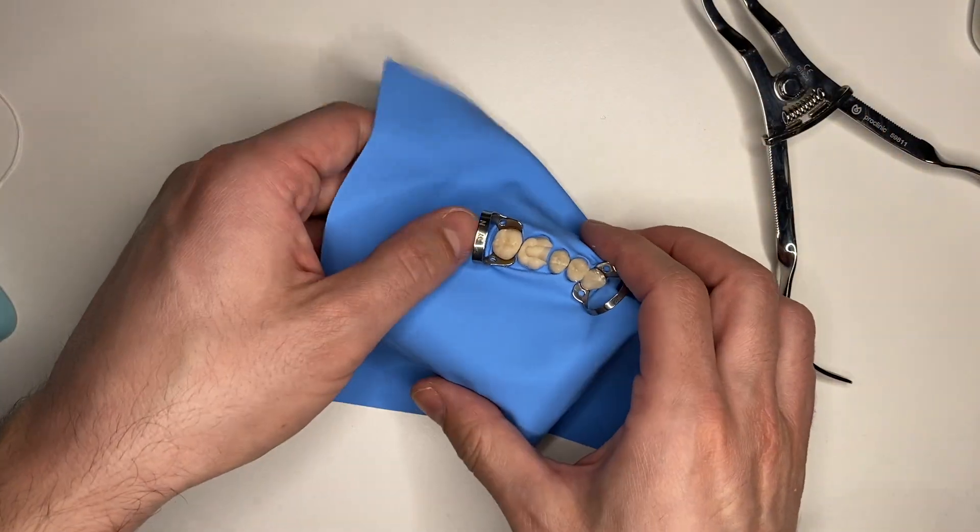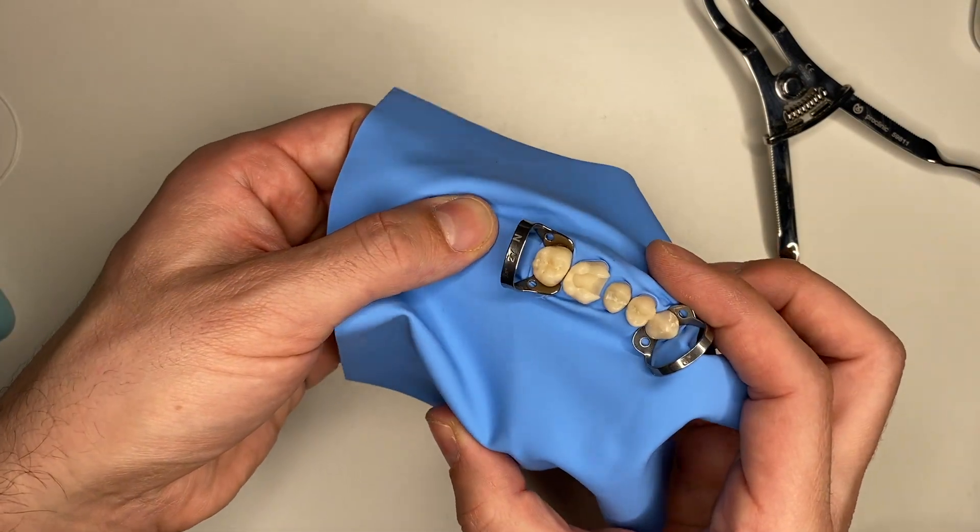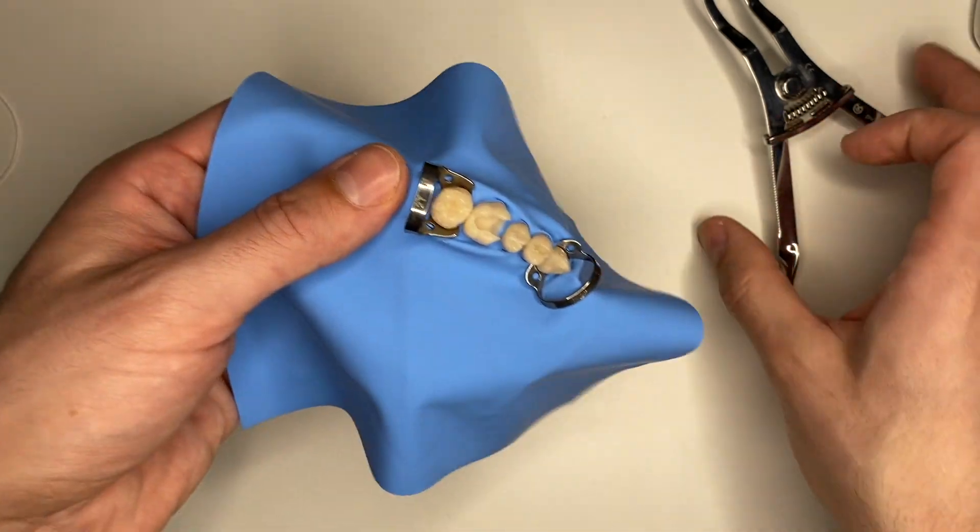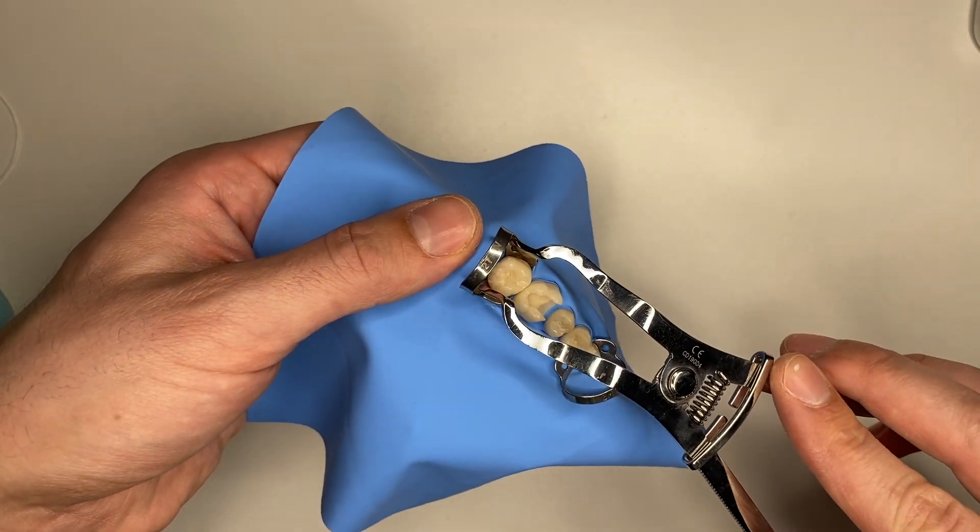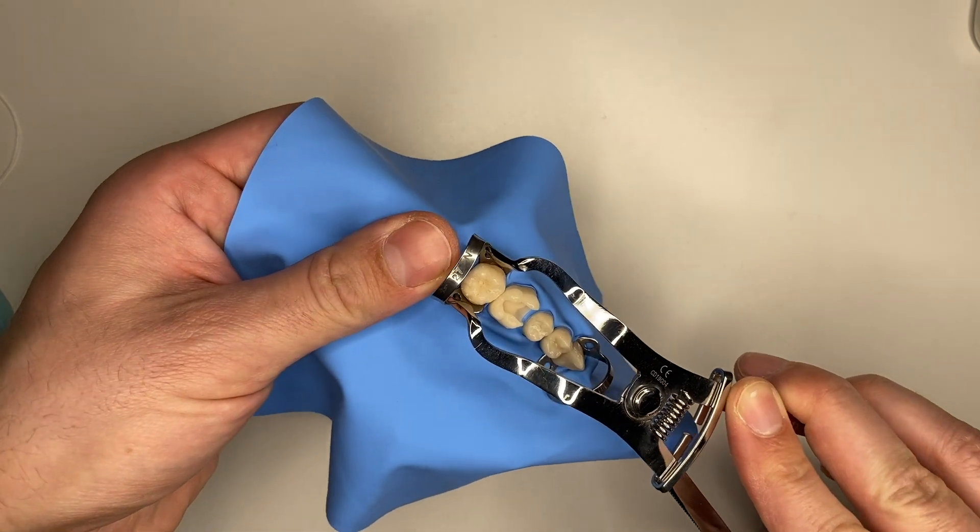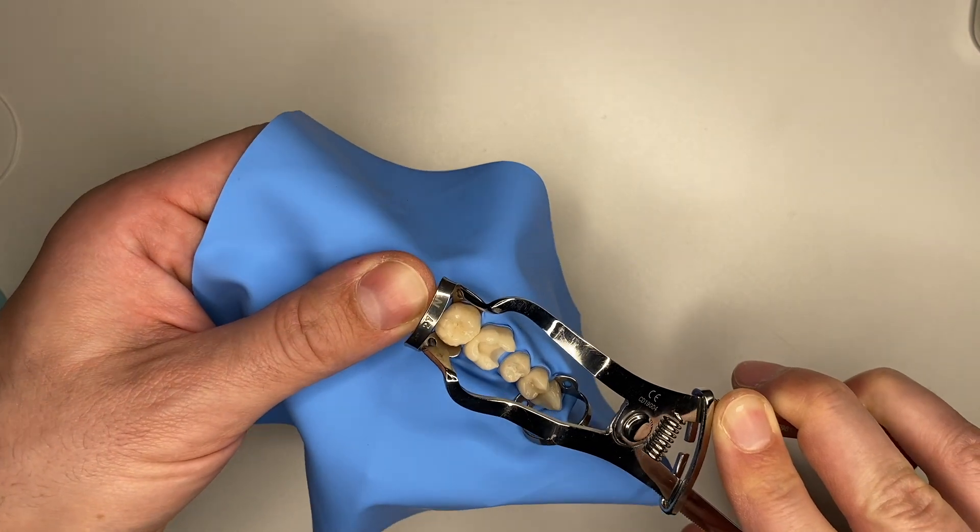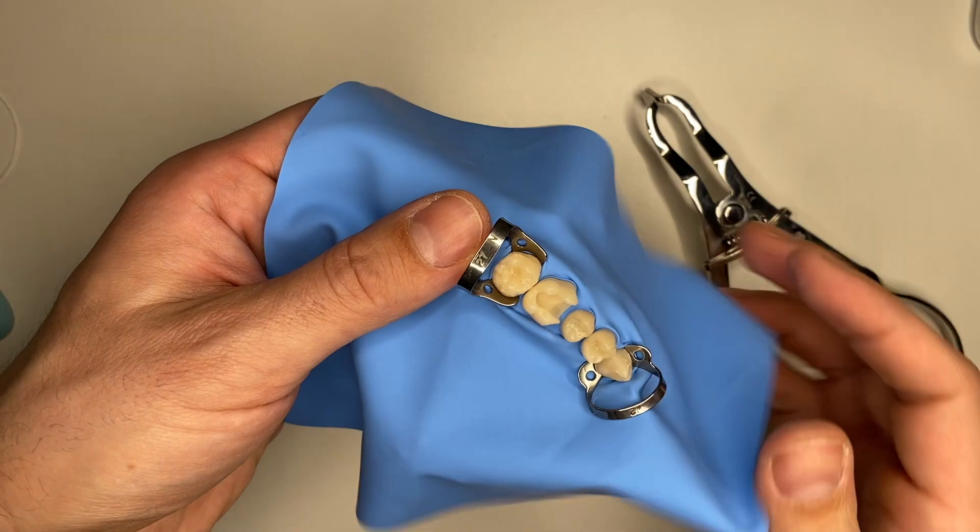Another thing, please have a look here behind my last molar. You can see the rubber dam isn't properly seated there. I just gently pick up the rubber dam clamp towards the palatal and then do the same towards the buccal. Now it's perfectly seated there as well.